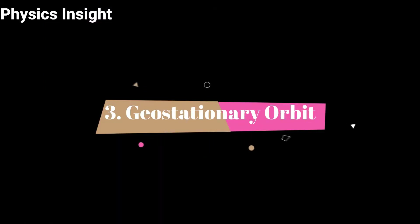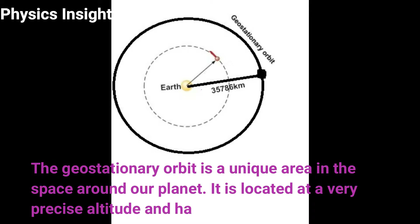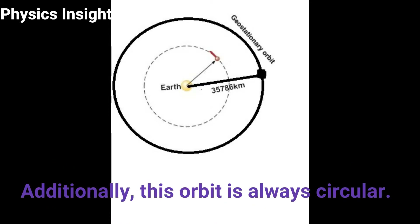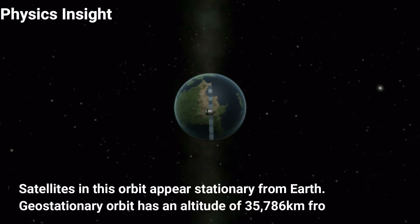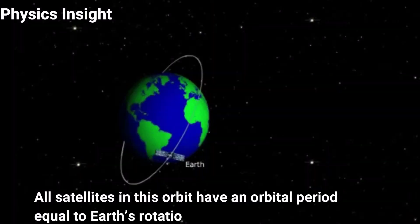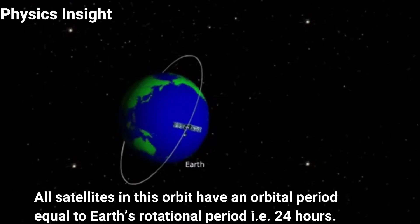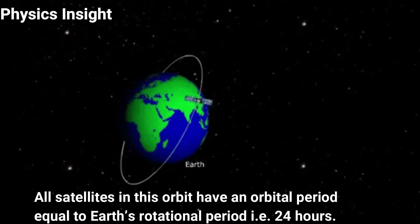Number three: Geostationary Orbit. The geostationary orbit is a unique area in the space around our planet. It is located at a very precise altitude of 35,786 kilometers from Earth and always has a circular orbit. Satellites in this orbit appear stationary from Earth, and all satellites here have an orbital period equal to Earth's rotational period of 24 hours.